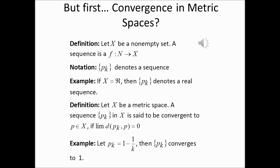For example, suppose the k-th term of some sequence is 1 minus 1 over k. We want to show that the sequence converges to 1. Suppose that X is the set of real numbers. Then we define the ordinary distance between any two points in X as the absolute value of x minus y. The ordinary distance between the k-th term of the sequence and 1 is simply the absolute value of 1 over k. Because X is the set of real numbers, we can remove the absolute value, so the distance is simply 1 over k.